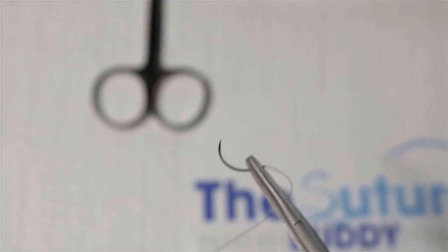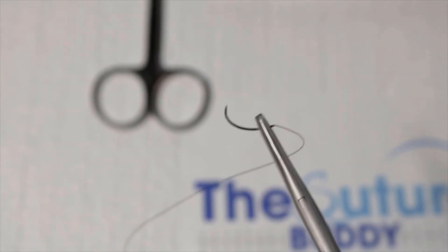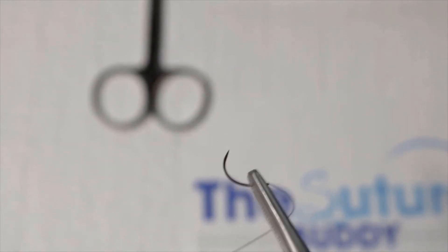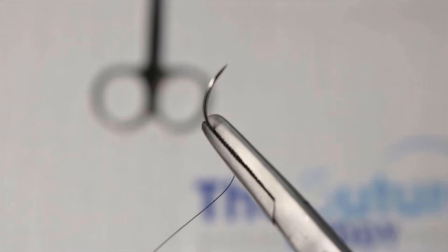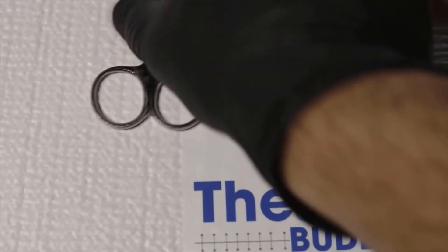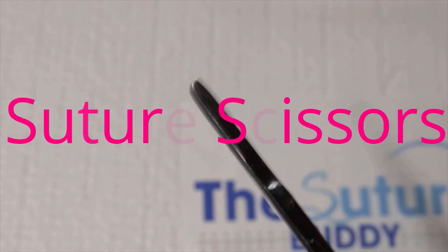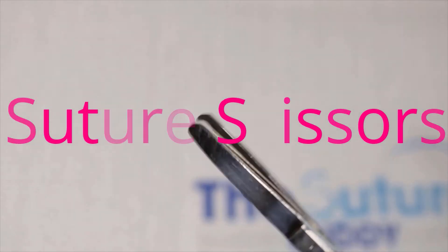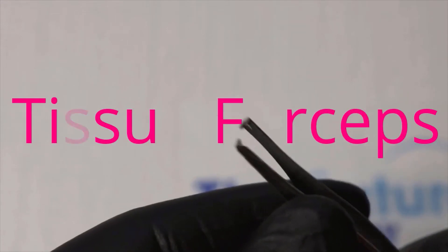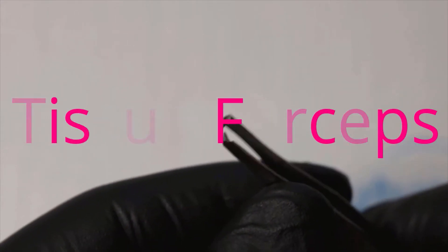Let's go ahead and load our needle. All right, more self-explanatory are our suture scissors - we cut the sutures when we're done. And lastly, our tissue forceps. Here we have some Adson tooth forceps, but you can use the ones without the teeth as well.